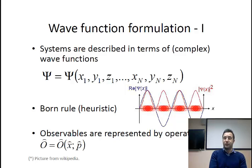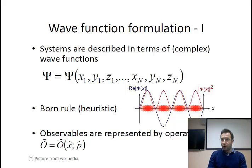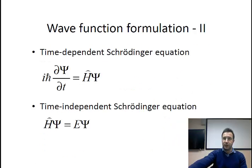What you do with these operators is apply them to the wave function, giving you an eigenproblem which tells you what are the possible outcomes of measuring that particular observable. This is a very big departure from classical mechanics, and this is how it works in the Schrödinger formulation.